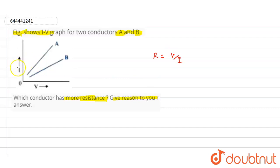The resistance of conductor B is more. The reason is that resistance value equals one divided by the slope of the I versus V graph.